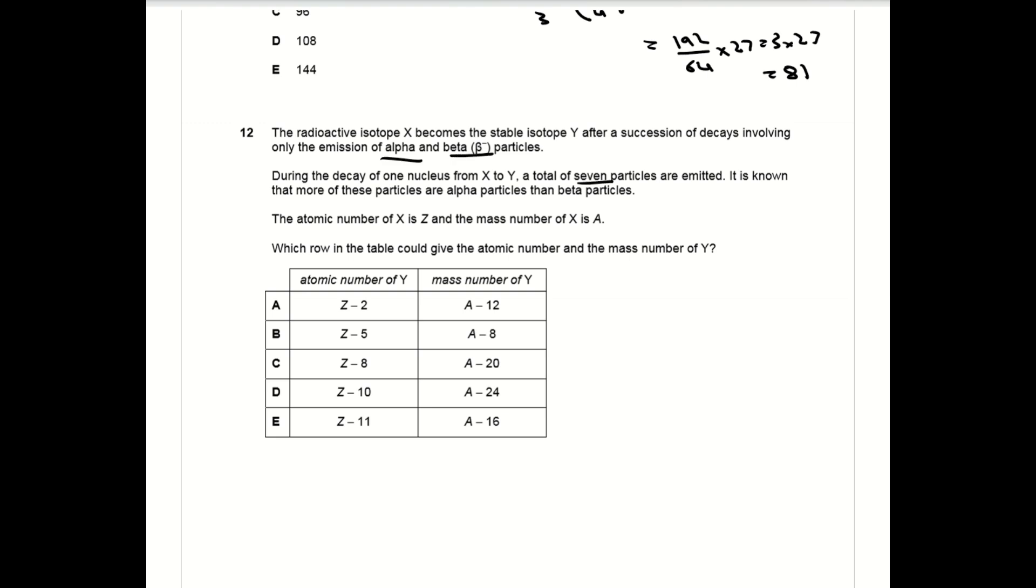Question 12 relies on you knowing how both alpha and beta minus decay affects both the mass number and the atomic number. For alpha decay, A decreases by 4, Z decreases by 2. For beta minus, A stays the same and Z increases by 1. The question also says that there are more alpha particles emitted than beta particles and there are seven particles emitted in total, so there must be at least four alpha particles.